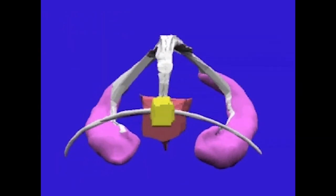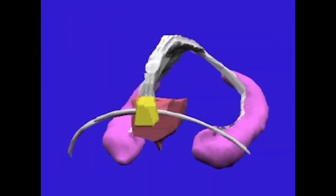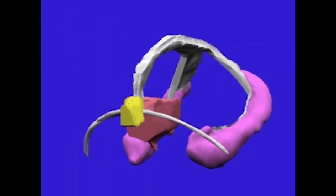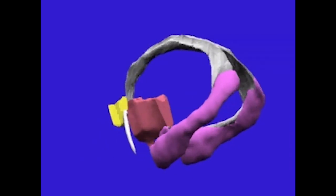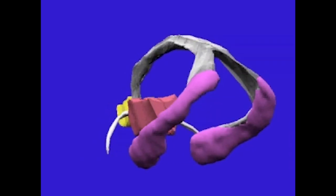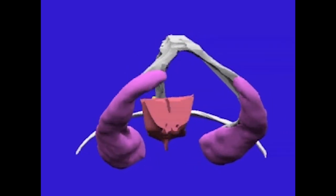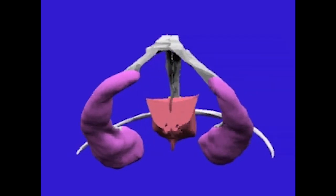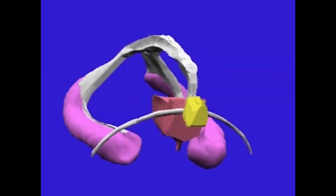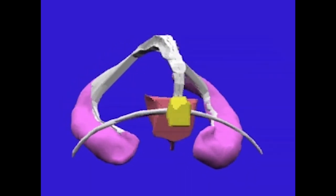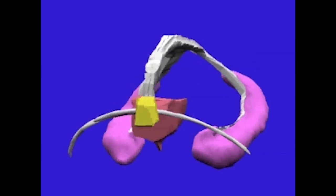Here you can see them coming at you with the septal region in front of the anterior commissure and the brown hypothalamus behind it. The large fornix, the band of fibers coming out of the purple hippocampus, is bending and looping forward down into the anterior part of the forebrain.